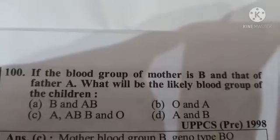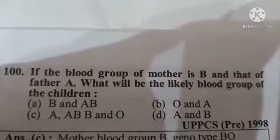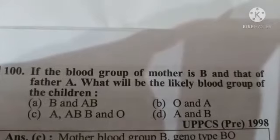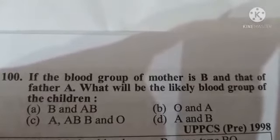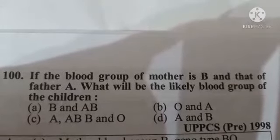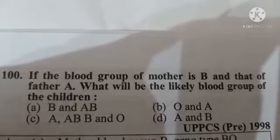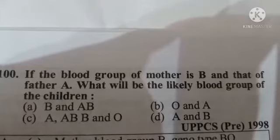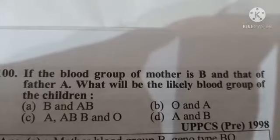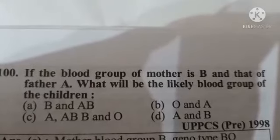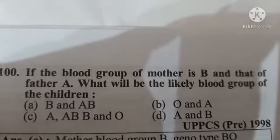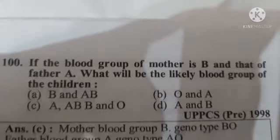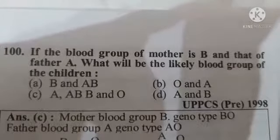Next question: if the blood group of the mother is B and that of the father is A, what will be the likely blood group of the children? Option A: AB and AB, Option B: O and A, Option C: A, AB, B and O, Option D: A and B. The correct answer is Option C: A, AB, B and O.